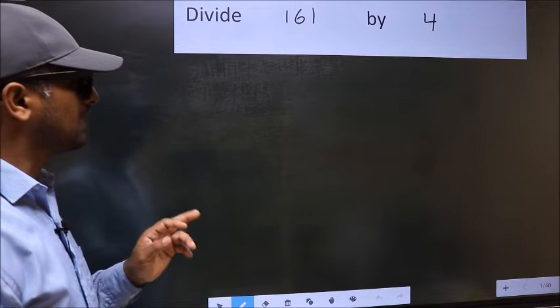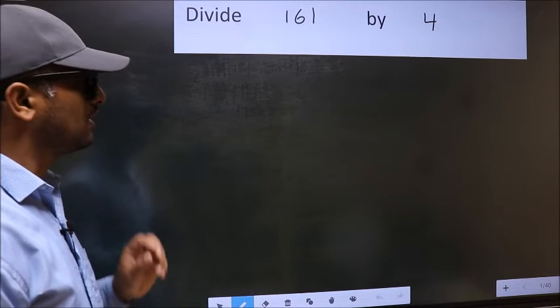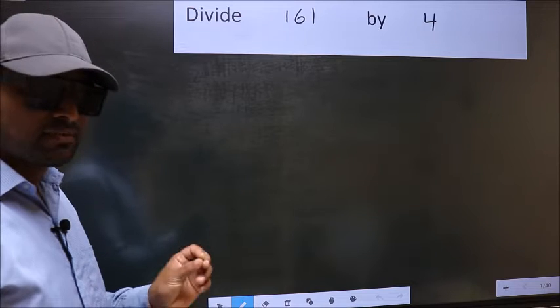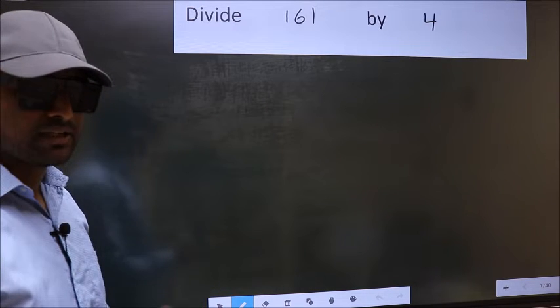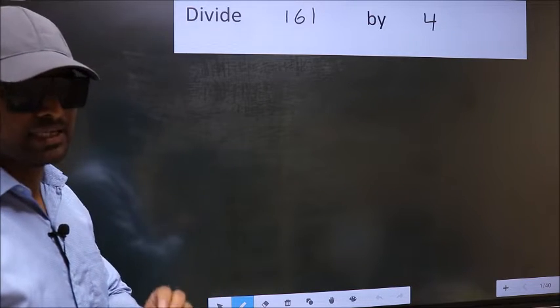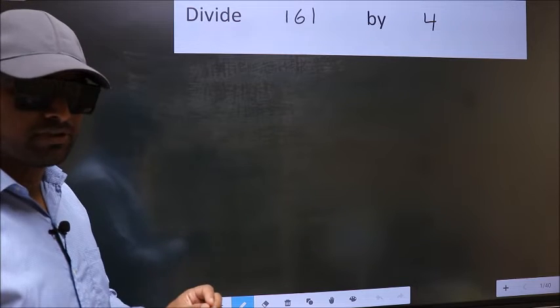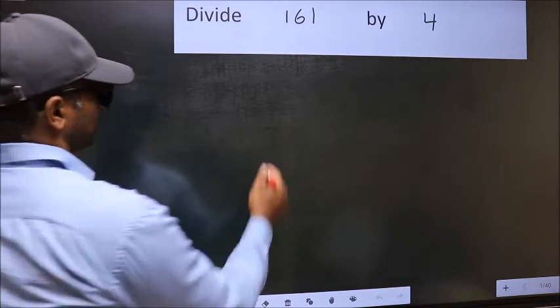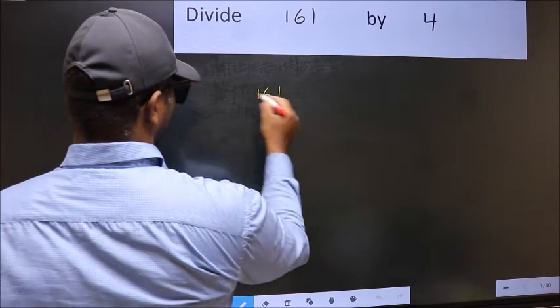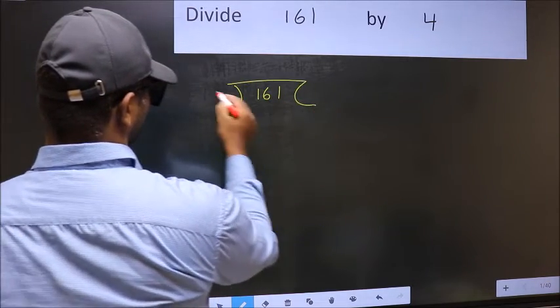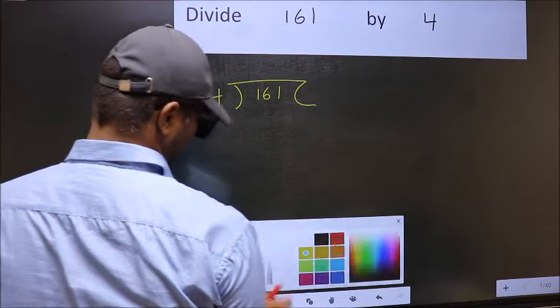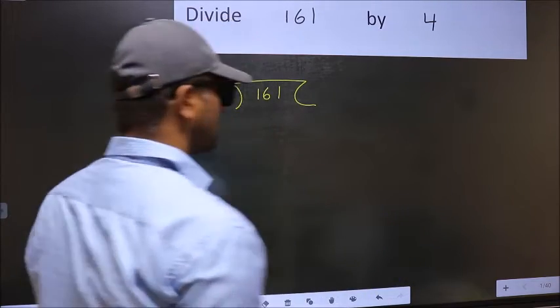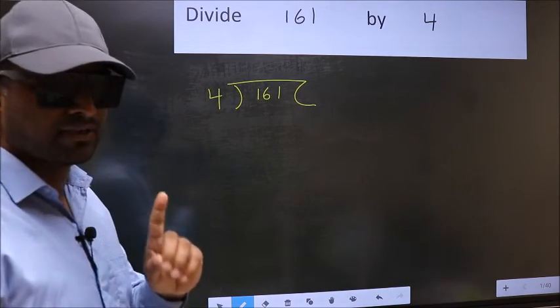Divide 161 by 4. While doing this division, many make this mistake. What is the mistake that they do? I will let you know. But before that, we should frame it in this way. 161, 4 here. This is your step 1.